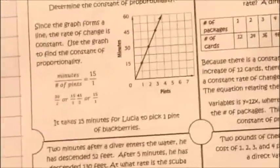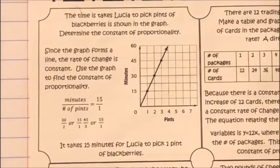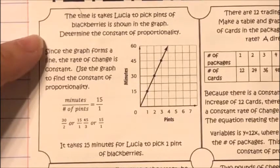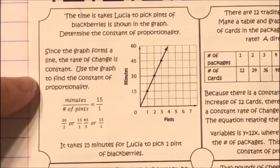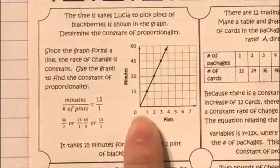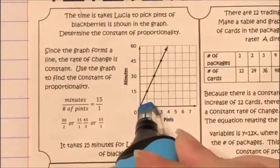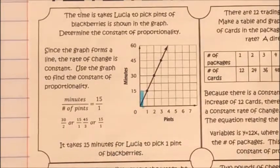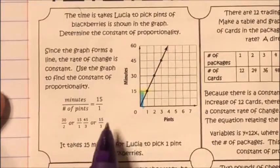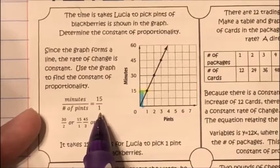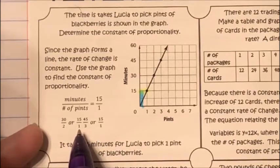Let's look at two problems. The first problem: the time it takes Lucia to pick pints of blackberries is shown in the graph. Determine the constant of proportionality. Since the graph forms a line, the rate of change is constant. We can see the line is straight and goes through (0, 0). The rate of change is: I go up from 0 to 15, that's my change in y, and over 1, that's my change in x. So it's 15 over 1. I could have done 30 over 2 or 45 over 3 — they all simplify to 15 over 1.